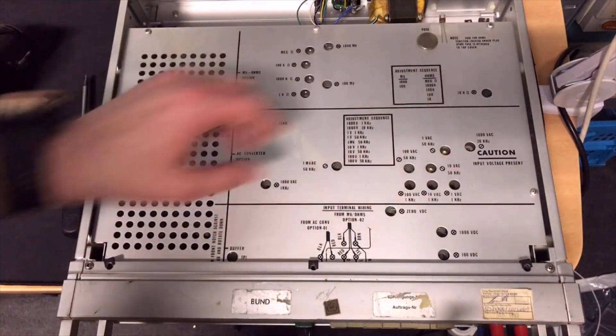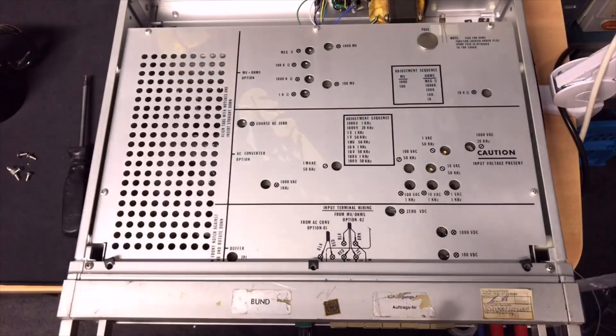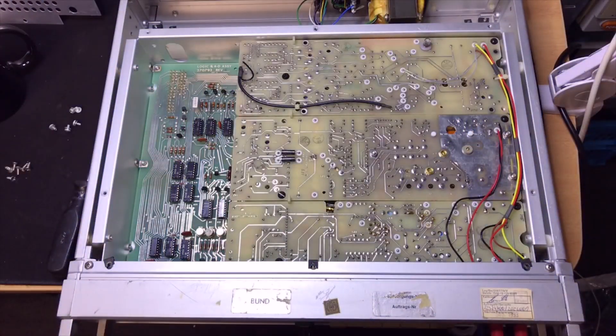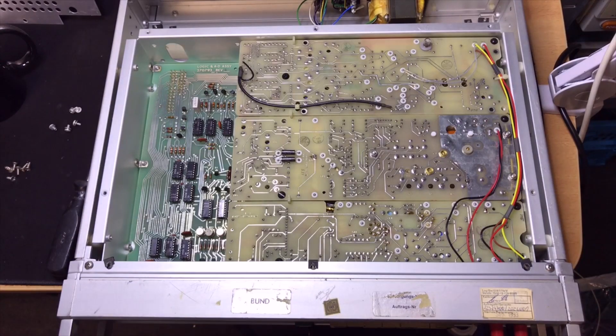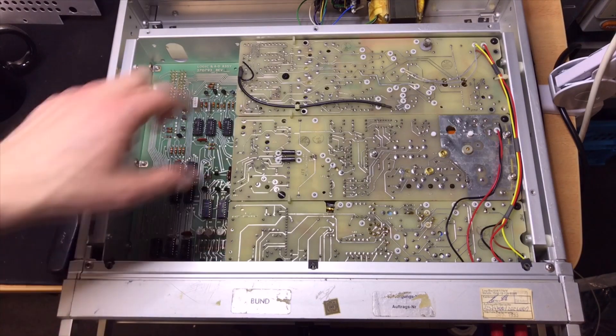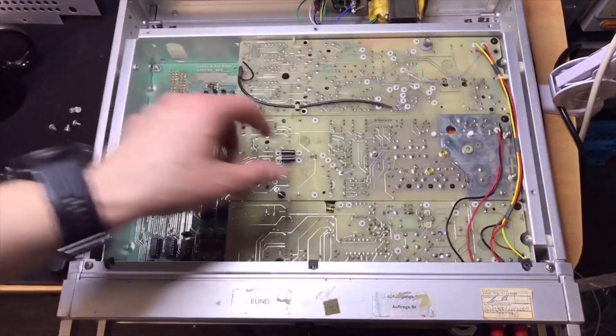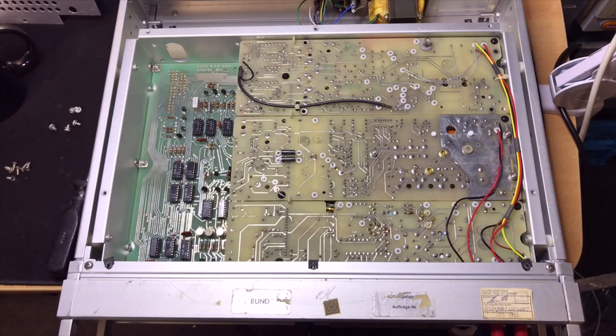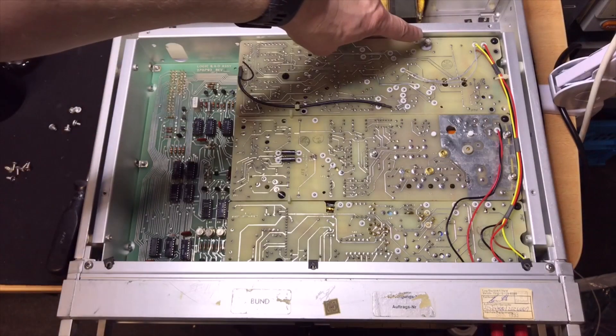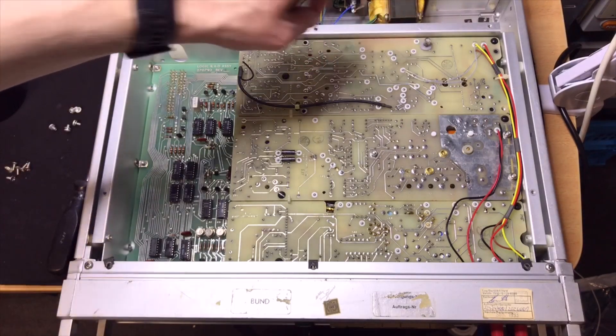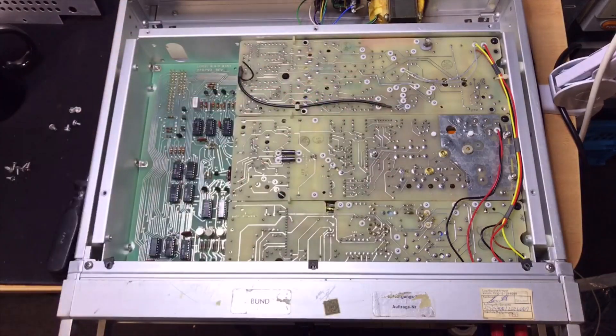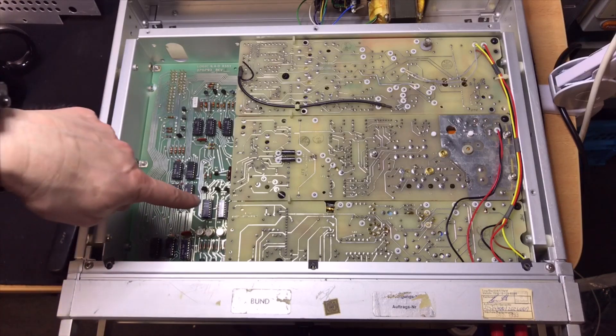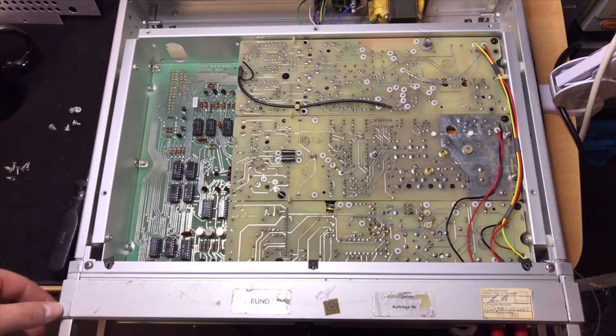Let's see what this is underneath this protection plate. Look at this, maybe if I add some light. So here are the extra modules and it looks all very nice. Here is the fuse, so where you can put the spare, and all the ICs are in sockets, which is nice.